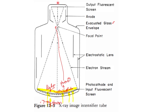These light photons carry the fluoroscopic image. When the electrons strike the output fluorescent screen, it emits light photons which contain the fluoroscopic image. So in the image intensifier, the X-ray photon is converted to a light photon, the light photon is converted to electrons, and these electrons are again converted to light photons.